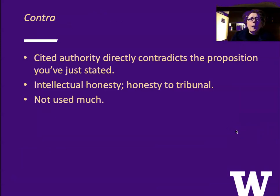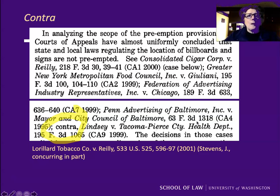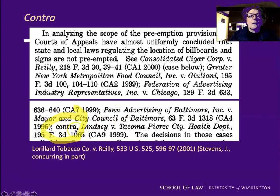'Contra' means that the cited authority directly contradicts the proposition you've just stated. It's important as a matter of intellectual honesty to admit that there are some cases that go against the proposition you've stated — honesty to the tribunal, honesty to your readers. This signal isn't used very often, not because people are dishonest, it just doesn't come up that much. Here's an example from a U.S. Supreme Court case. Justice Stevens said: 'The courts of appeals have almost uniformly concluded [proposition],' citing four cases, and then 'contra, Lindsay v. Tacoma Pierce County Health Department.' So the justice said the bulk of the cases go this way, and then contra is this one other case.